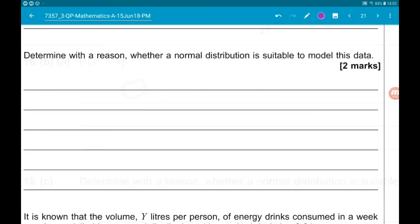Part C wants us to determine whether a normal distribution is suitable for this data. The mean 1.38 is incredibly close to 0.